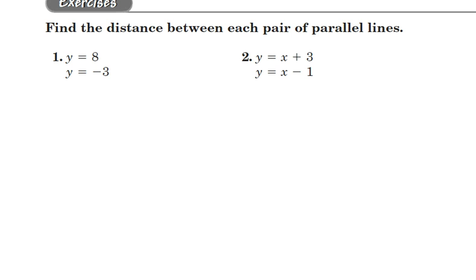Alright, look at number 1. We're going to find the distance between the parallel lines. Number 1 is a set of parallel lines. They both happen to be horizontal. So, I've got a horizontal line, y equals 8, and a horizontal line, y equals negative 3.